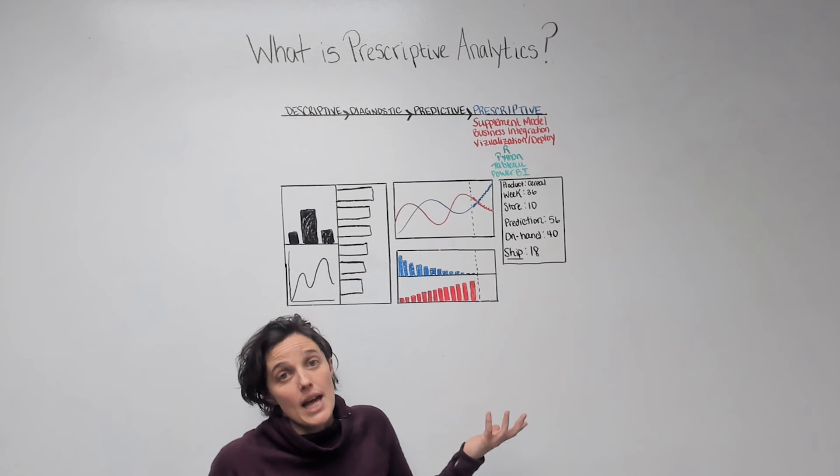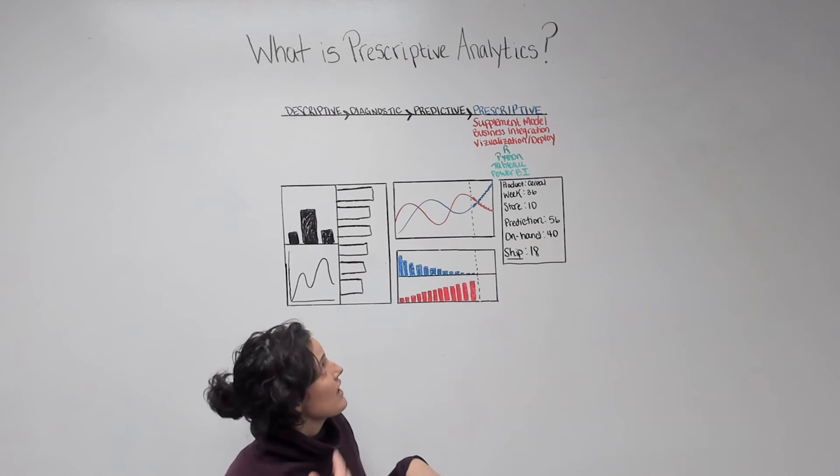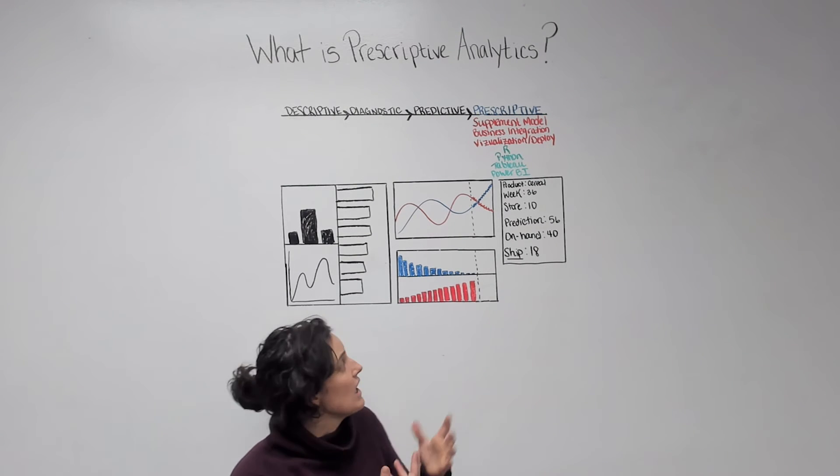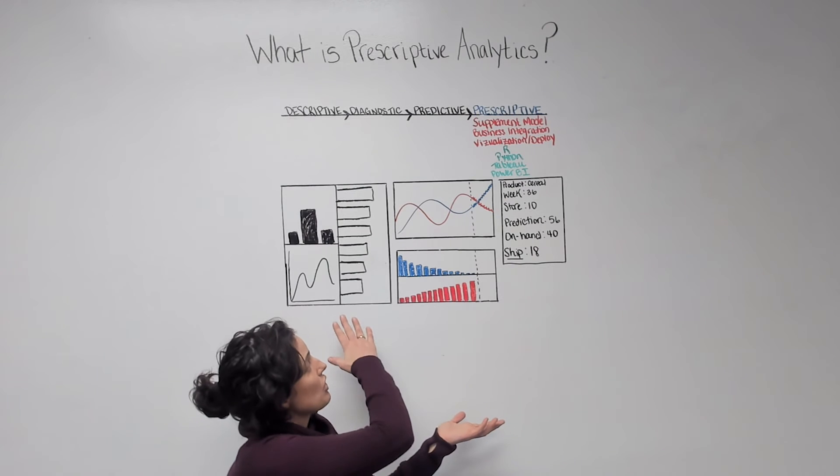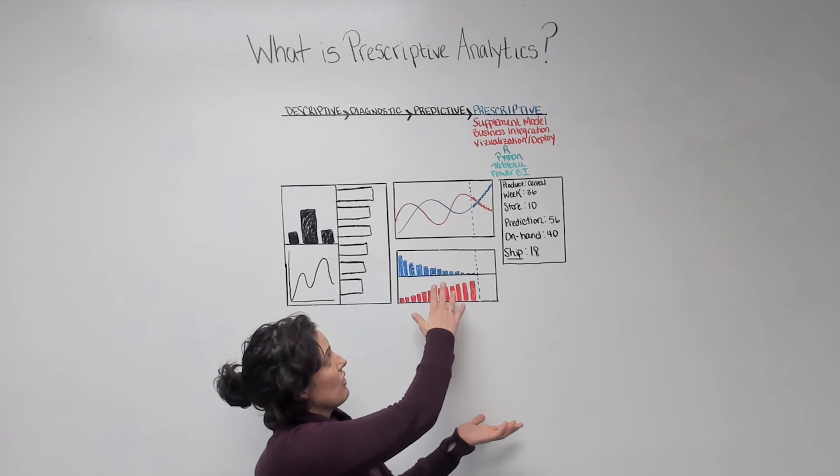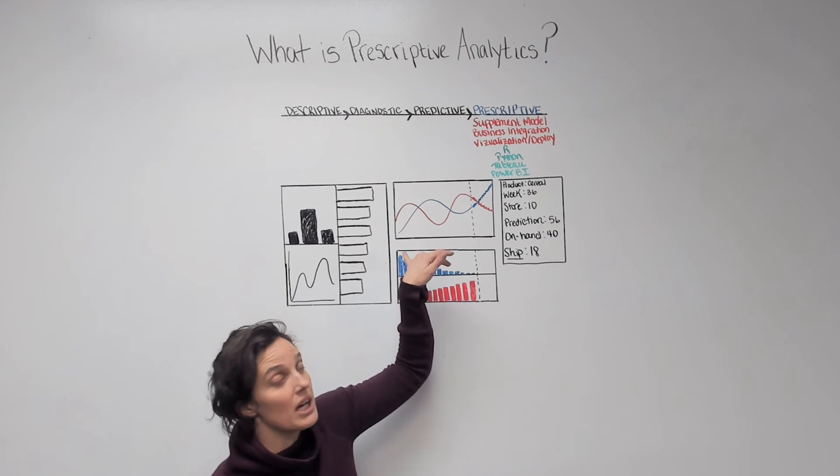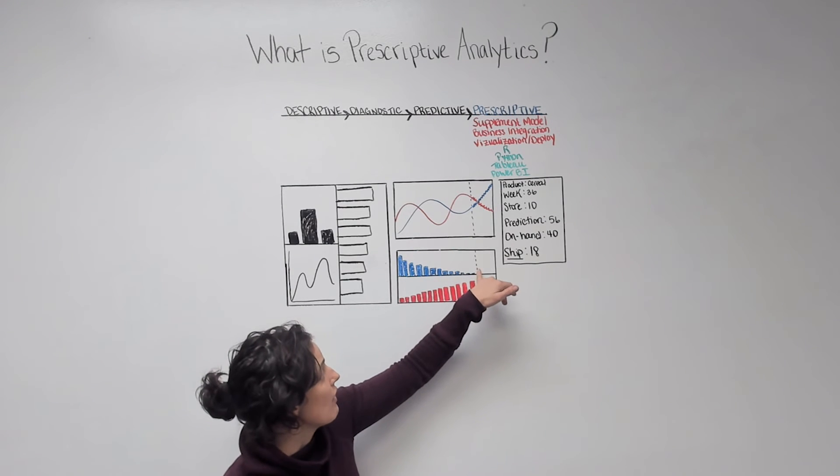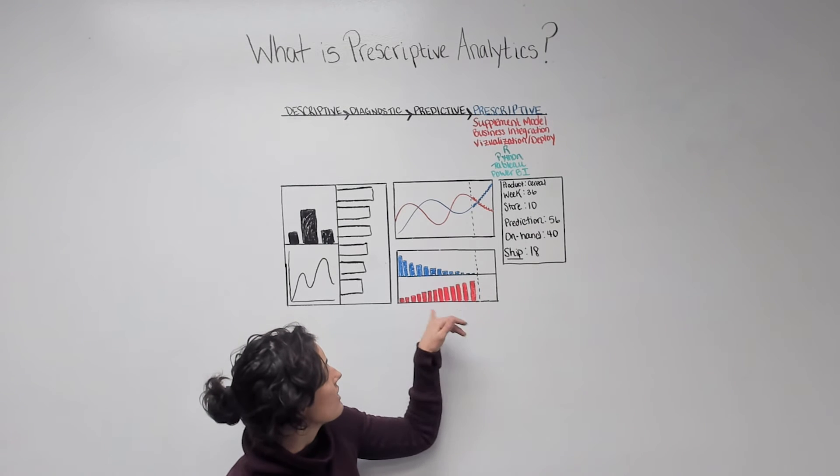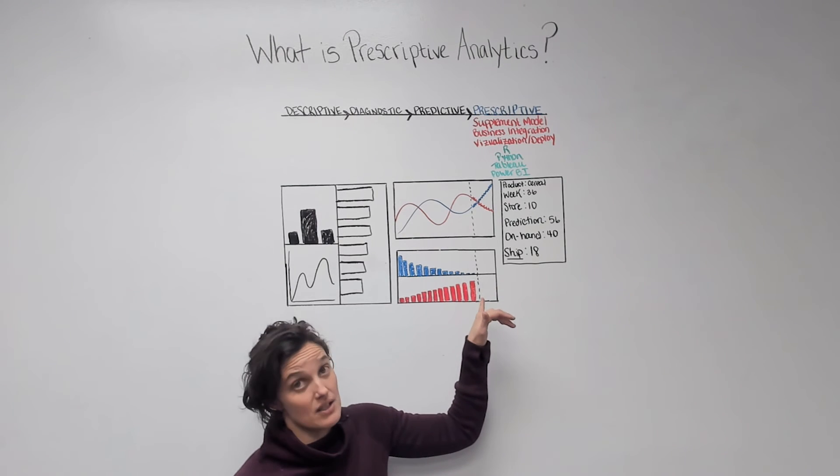So now what? What do we do with that information? That's where prescriptive analytics comes in. We integrate that with the descriptive information we have, which down here is telling us what is on hand. We can see that the blue product, the inventory in the store, is going down and we're about to run out, whereas the red products, we have an abundance of those.